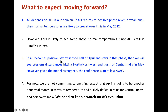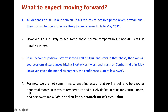However, if the Arctic Oscillation becomes positive by around April 20th or towards the end of April and stays in that phase, then we will see Western disturbances hitting north and northwest India and also parts of central India. Given the model divergence, the confidence in that is quite low — we are only 50% confident that we will see moderate or strong Western disturbances by end of April or start of May. For now, we are not committing to anything except that April is going to be another abnormal month with slightly abnormal temperatures. There will be a little bit of respite as the Arctic Oscillation moves towards a neutral phase, so we will not have a very extreme heatwave, but deficit in rains is going to continue for central, north, and northwest India.